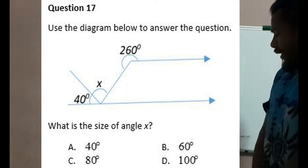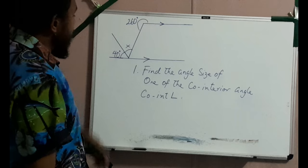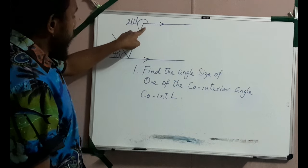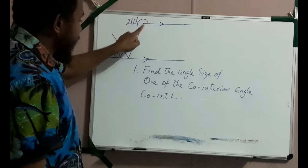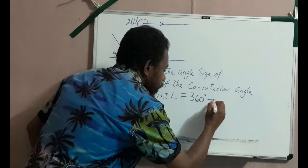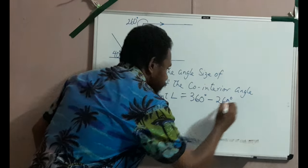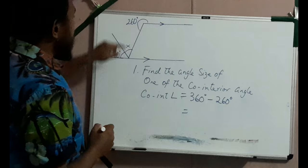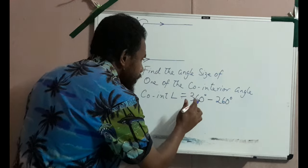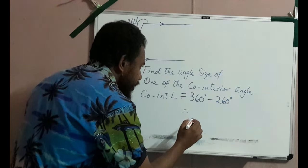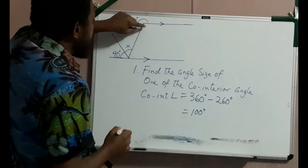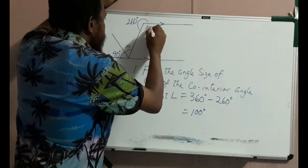Step number one: Find the angle size of this co-interior angle. The angle size of this co-interior angle is equals to 360 degrees take away 260 degrees, because this is a reflex angle. The difference between these two, 360 degrees and 260 degrees, is 100 degrees. What we are saying here is that this co-interior angle measures 100 degrees.